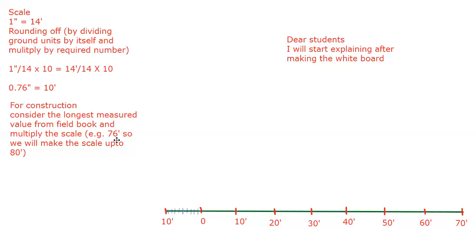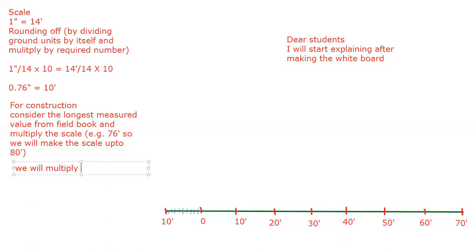For construction, we consider the biggest value measured in the field. Here the biggest value is 76 feet, so we have to make a scale up to 80 because 80 is a multiple of 10. To do that, we multiply: 10 becomes 80 by multiplying with 8. So we will multiply the labeling scale by 8 to construct the scale.